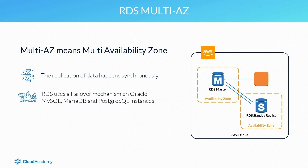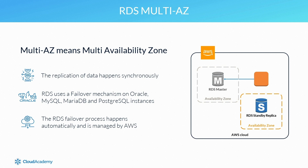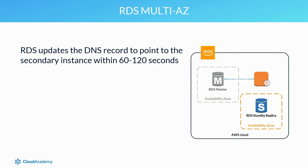For Oracle, MySQL, MariaDB, and Postgres, all of these database engines use the failover mechanism when multi-AZ is configured. If an incident occurs causing an outage to the primary RDS instance, the RDS failover process takes over automatically. This process is managed by AWS and is not something you need to manually perform or trigger. RDS will update the DNS record to point to the secondary instance.